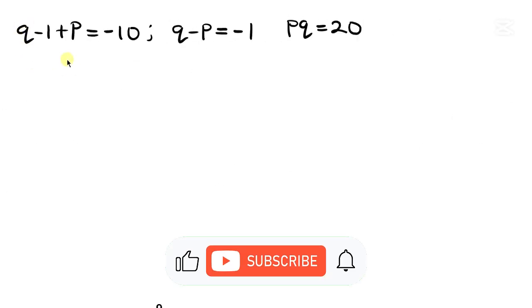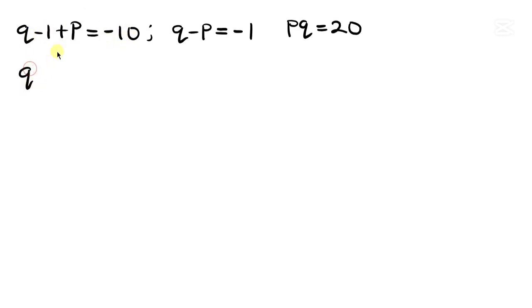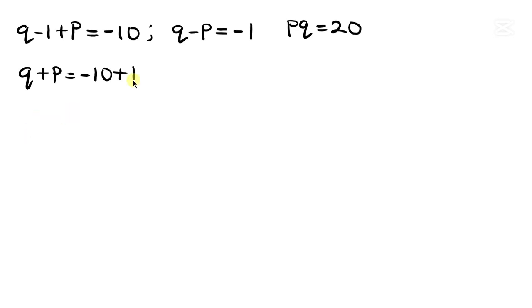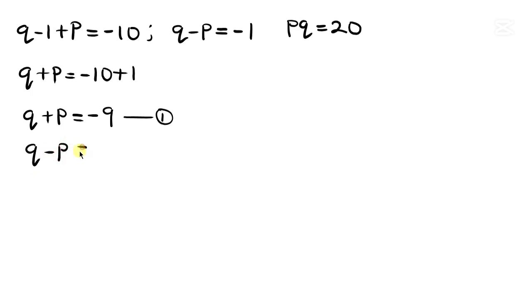From equation 1, moving negative 1 to the right: q plus p equals negative 9. Equation 2 is q minus p equals negative 1.